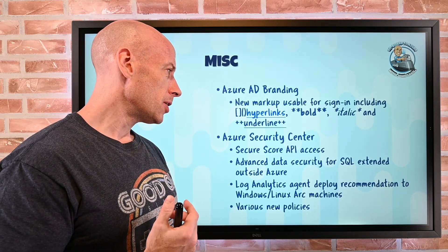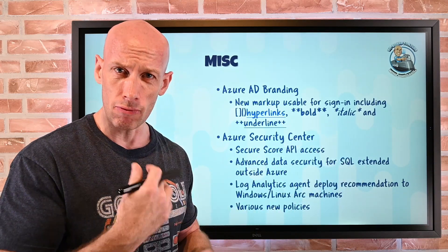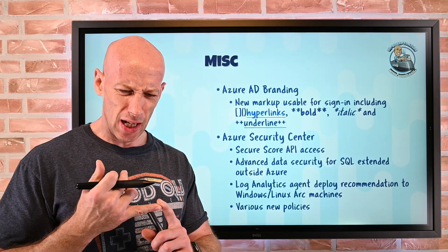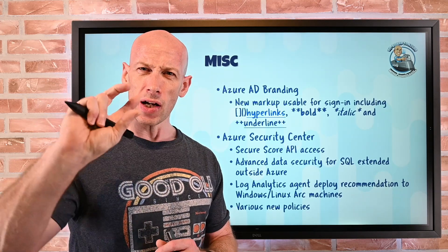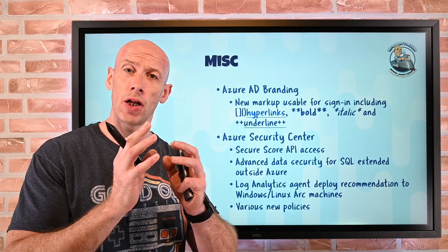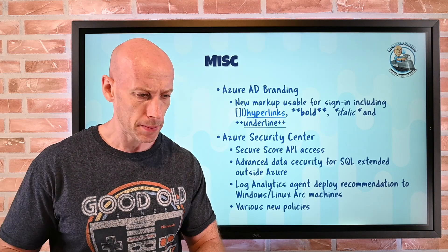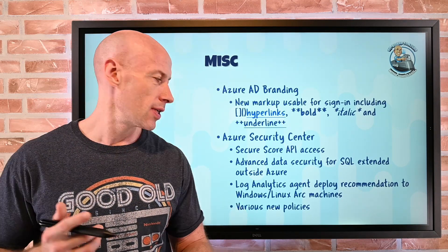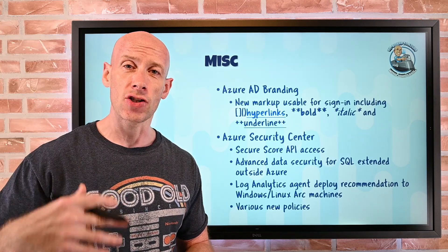The log analytics agent deploy recommendation will now be shown for Windows and Linux Arc machines, recommending you install the agent. There are new policies around continuous export and workflow automations for security alerts and recommendations. Previously, network security group alerts would flag even non-internet-facing machines, causing confusion. Now those alerts are separated into internet-facing and non-internet-facing. There's also a whole new set of threat protections for things like AKS, SQL, storage, and App Service plans, all rolling into new Security Center policies and recommendations.